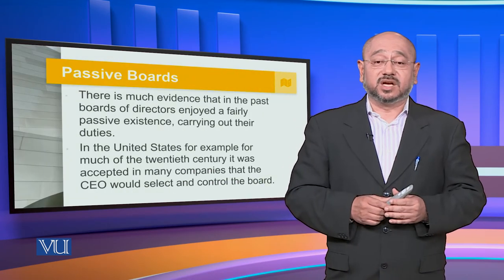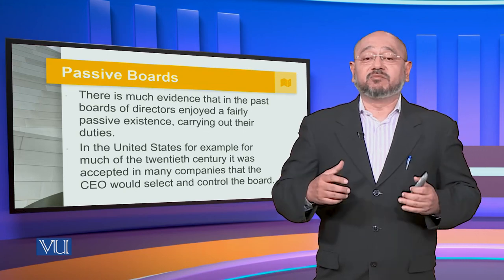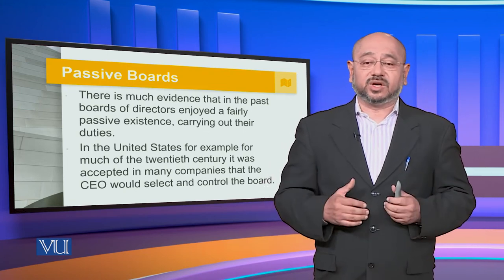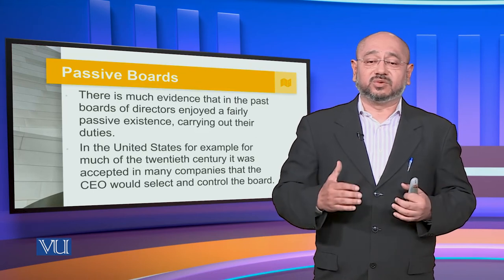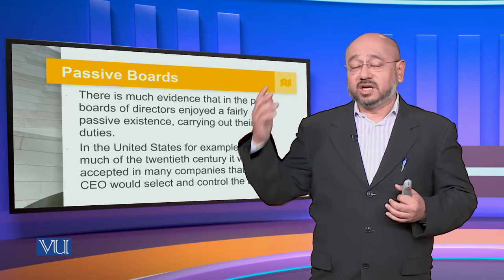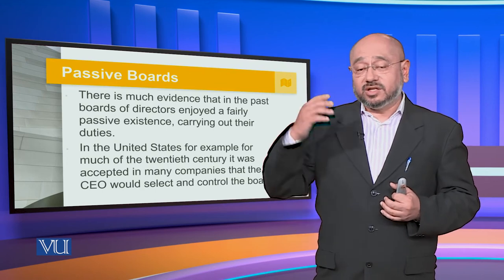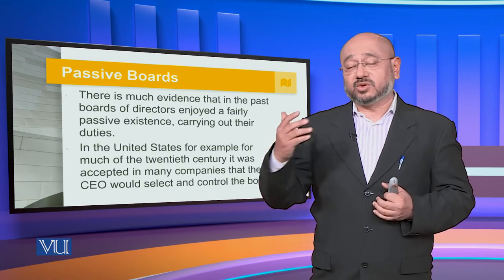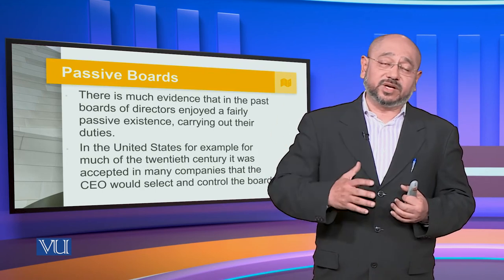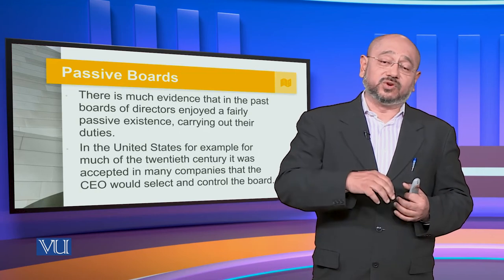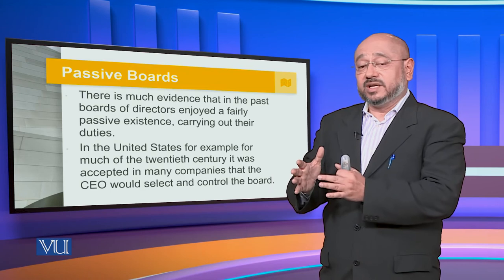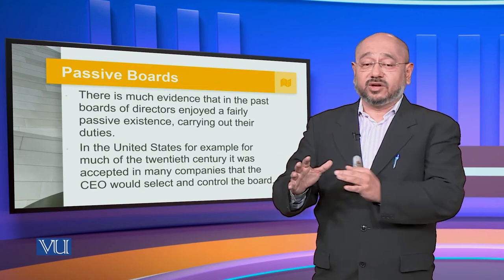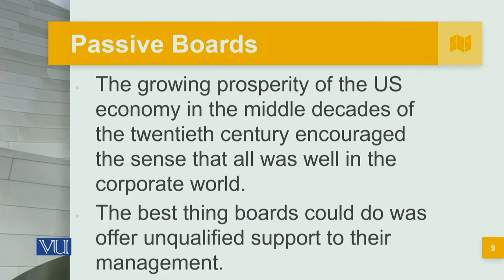There is much evidence that in the past, boards of directors enjoyed a fairly passive existence. In the United States, for example, much of the 20th century it was accepted in many countries that the CEO would select and control the board. This is a conflict of interest — if the CEO is selecting and controlling the board, the board is definitely going to make decisions that reinforce the CEO.